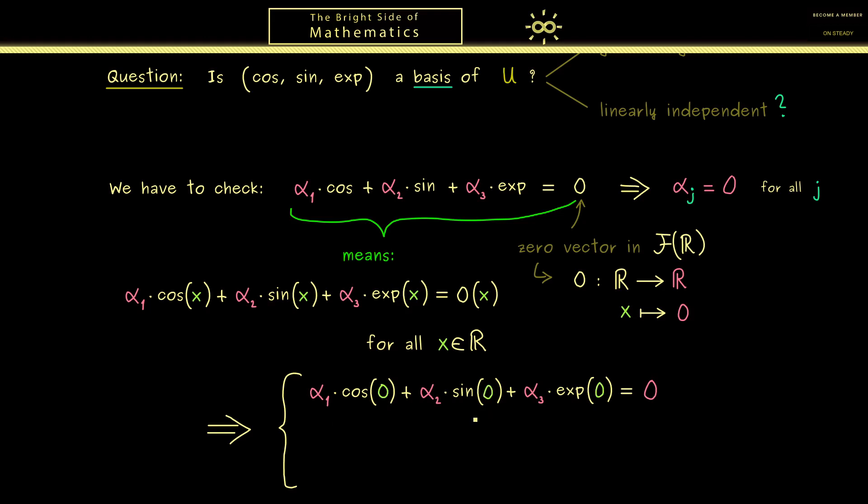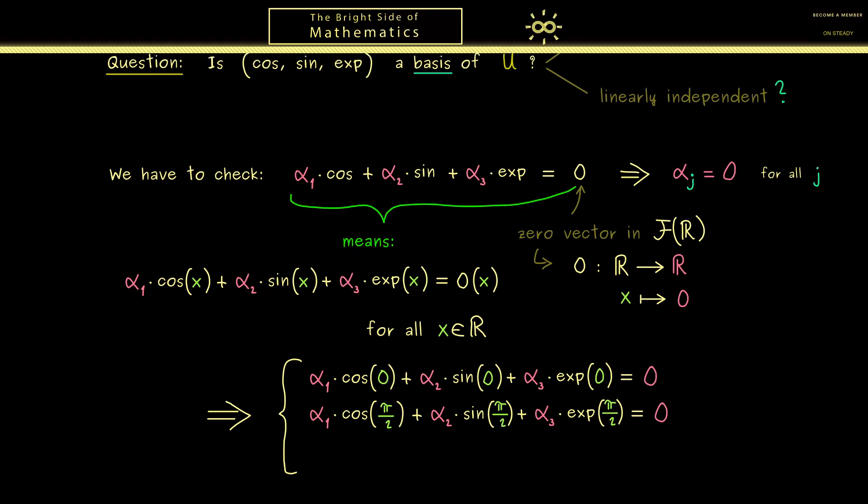Now this already helps us, because the sine of zero is obviously zero again. Moreover, the same idea we could take for the cosine, so we choose pi over two for the next x. Okay, with that, we now have already two ordinary equations, and so we search for a third one.